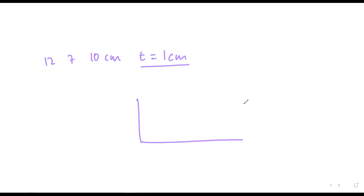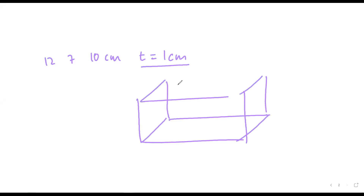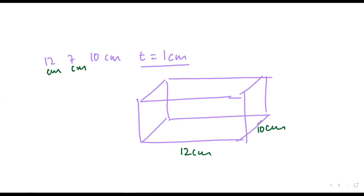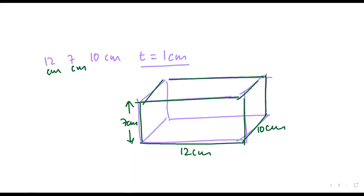The nearest example I can take is of an aquarium. Have you guys seen an aquarium? The only difference here is that the aquarium is usually open, but here this box is closed. So let me say this is 12 centimeter, this is 10 centimeter, and the height is 7 centimeter.